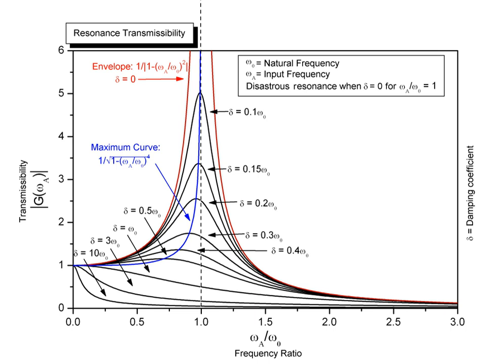Mechanical resonance is the tendency of a mechanical system to absorb more energy when the frequency of its oscillations matches the system's natural frequency of vibration than it does at other frequencies. It may cause violent swaying motions and even catastrophic failure in improperly constructed structures including bridges, buildings, trains, and aircraft. When designing objects, engineers must ensure the mechanical resonance frequency of the properties of the component parts do not match driving vibrational frequencies of motors or other oscillating parts, a phenomenon known as resonance disaster.